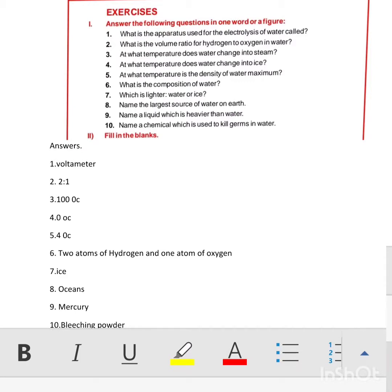Question 8: Name the largest source of water on earth. There are different sources of water on earth - springs, rivers, streams, seas, lakes, and oceans. The largest source of water is the ocean.